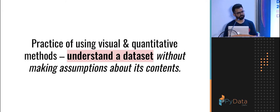So, a very formal definition would be the practice of using visual and quantitative methods to understand a dataset, importantly without making any assumptions about its contents. So we would not say I expect the mean to be this, so I'll just try to do my analysis so that the mean comes out to be that. That would be biasing.